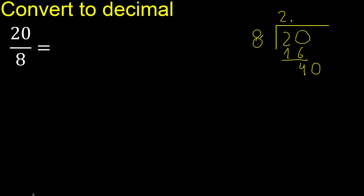40. 8 multiply by 5 is 40. 40 is not greater; 40 minus 40 is 0. Therefore finish.